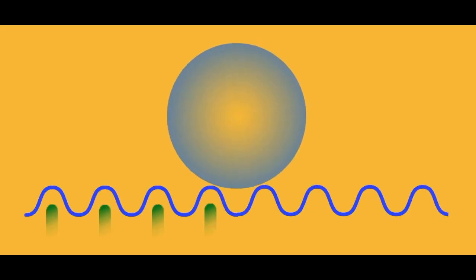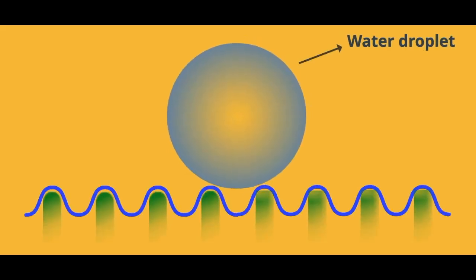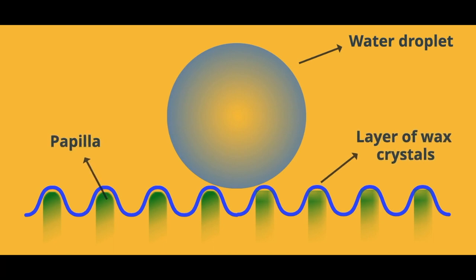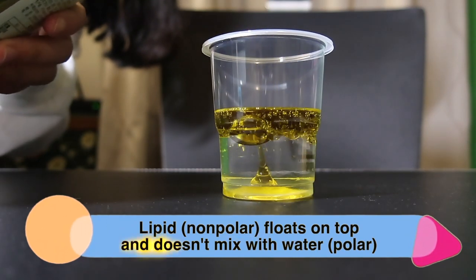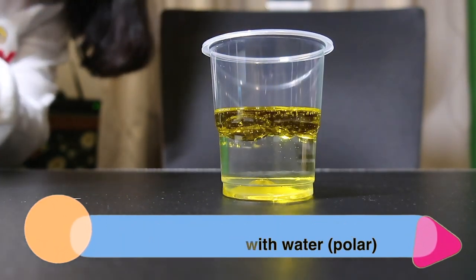When it comes in contact with water, which is polar, they don't mix because they are not very attracted to each other. In other words, the water molecules have strong cohesive forces with their own group of friends but only weak adhesive forces with wax molecules.